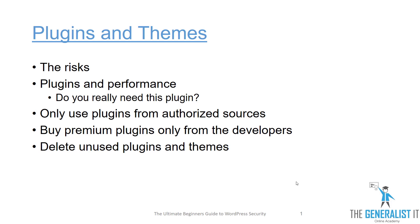Speaking about premium plugins, I want to emphasize one thing: only buy premium plugins from the original developers. You must understand that WordPress is open source software, and themes and plugin developers are required to keep their source code publicly available. The upside is that anyone can look at the code for risks and flaws. The downside is that anyone can copy the code. As a result, there are some sites on the internet that offer premium plugins they do not own for a very low price — sometimes a plugin that costs $70 or $100 for five dollars or less.